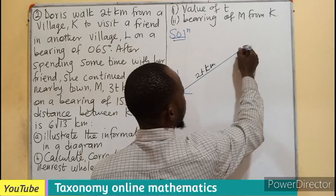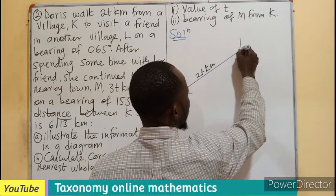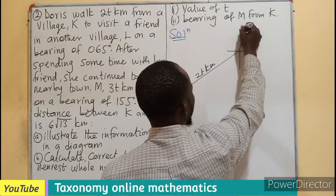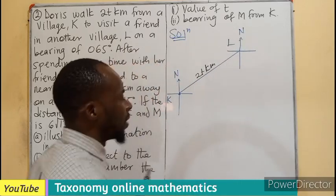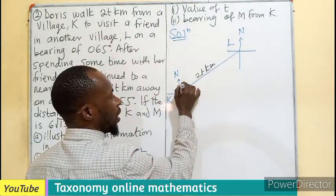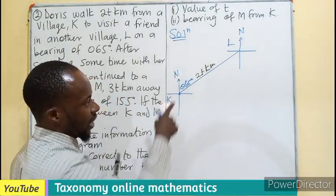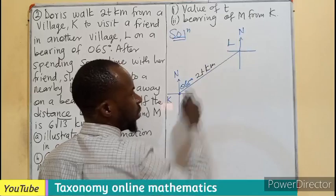Then the town is also L. On a Cartesian plane, so we have the north, then we have the L. The degree is 65 degrees.